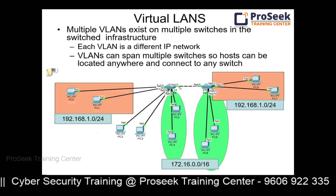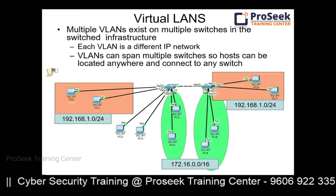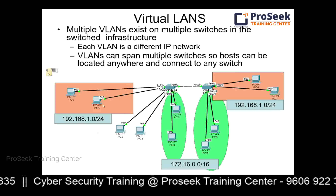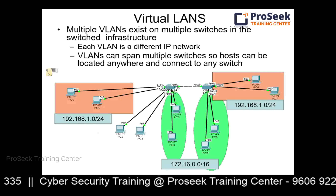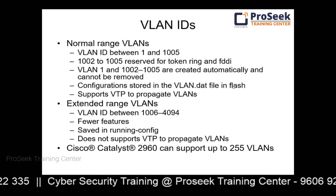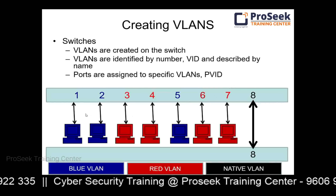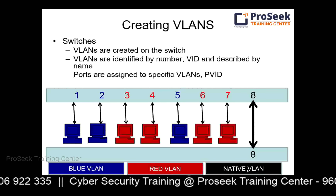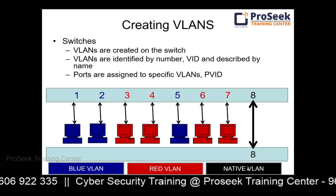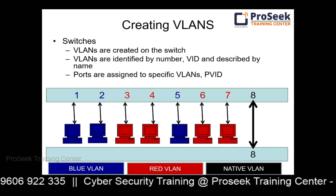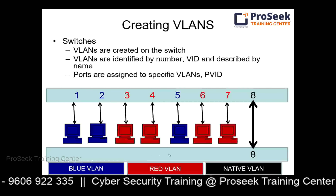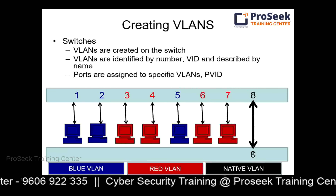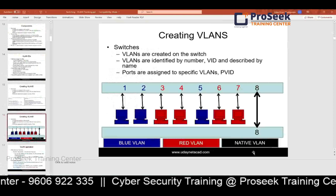The link between two switches is called a trunk link. A trunk link carries multiple VLAN traffic from one network to another. For example, we can have a blue VLAN, a red VLAN, and a native VLAN. The native VLAN is the default VLAN — by default it is VLAN 1, but it can be changed. If two switches need to pass multiple VLAN traffic, they need a trunk link connecting them.